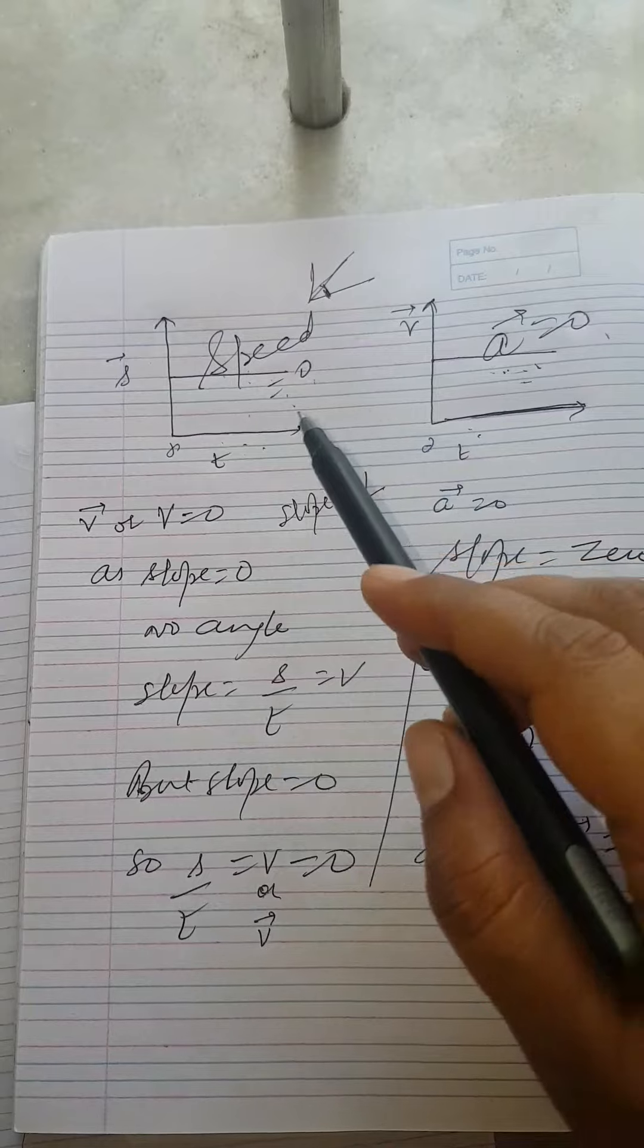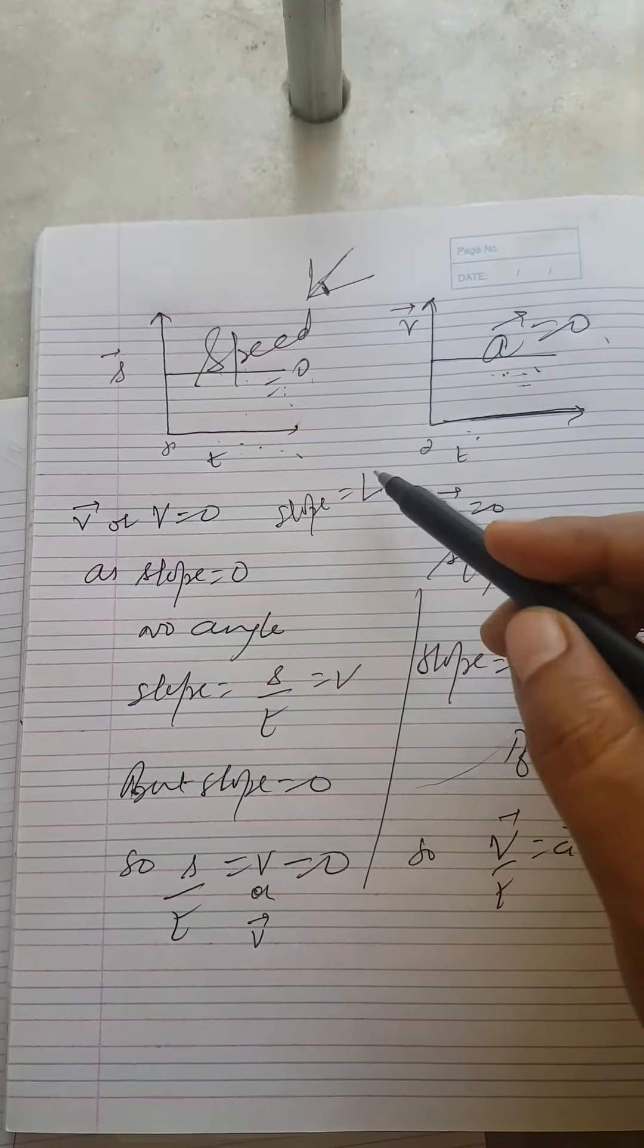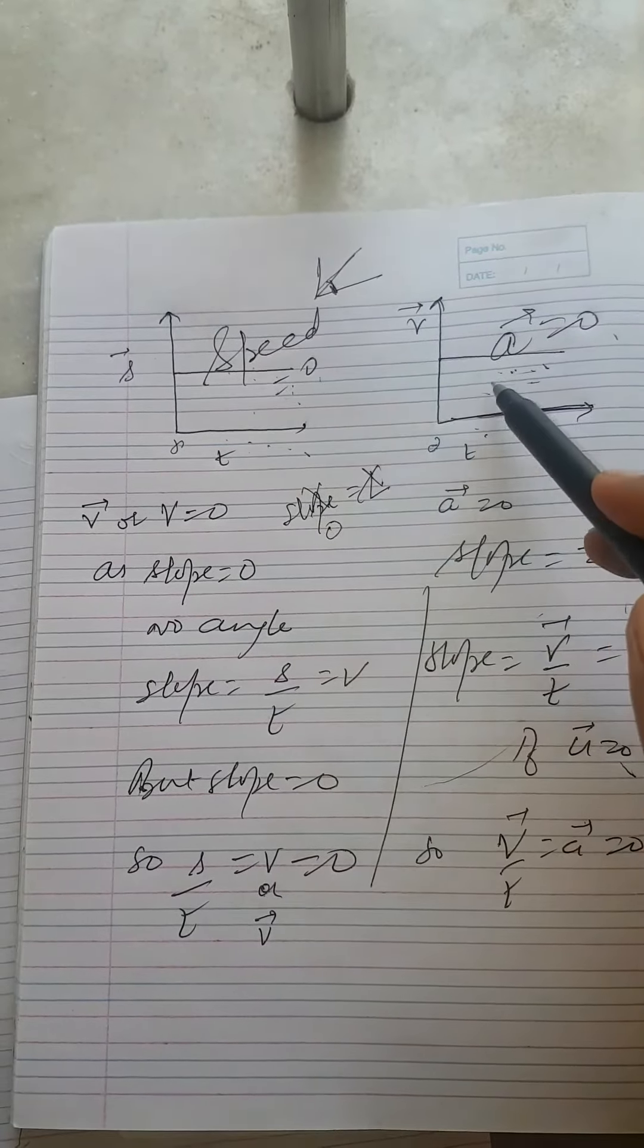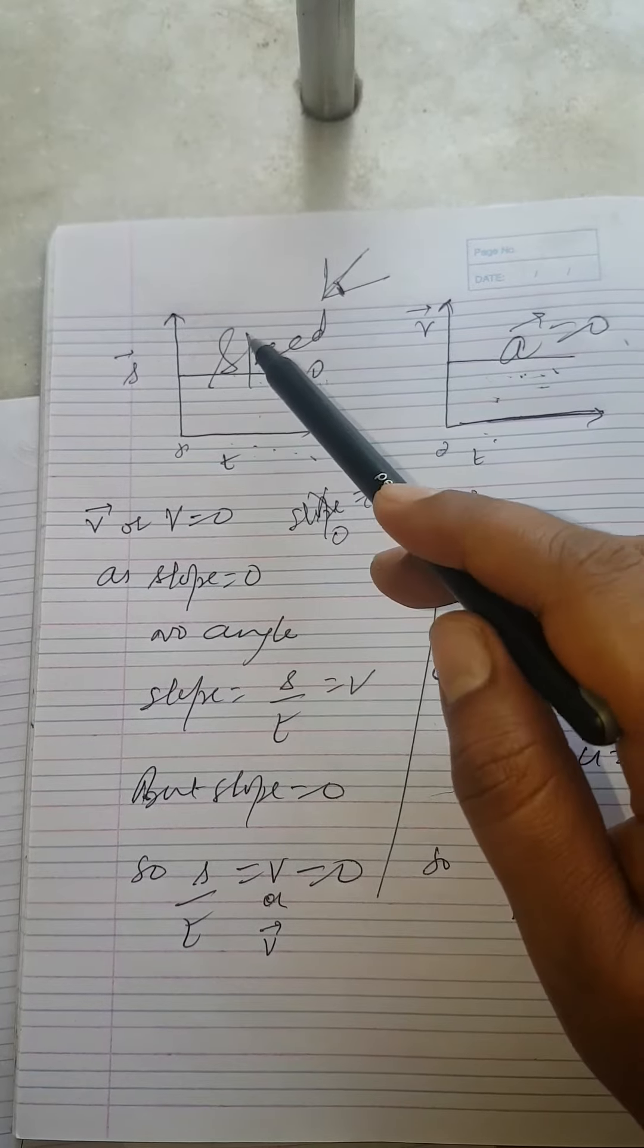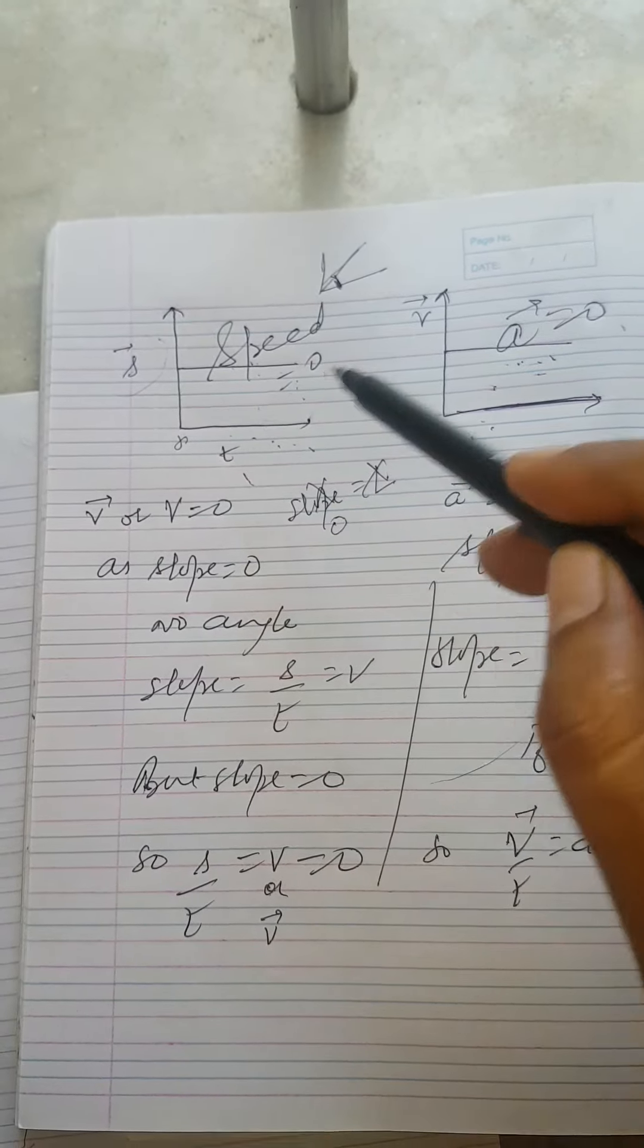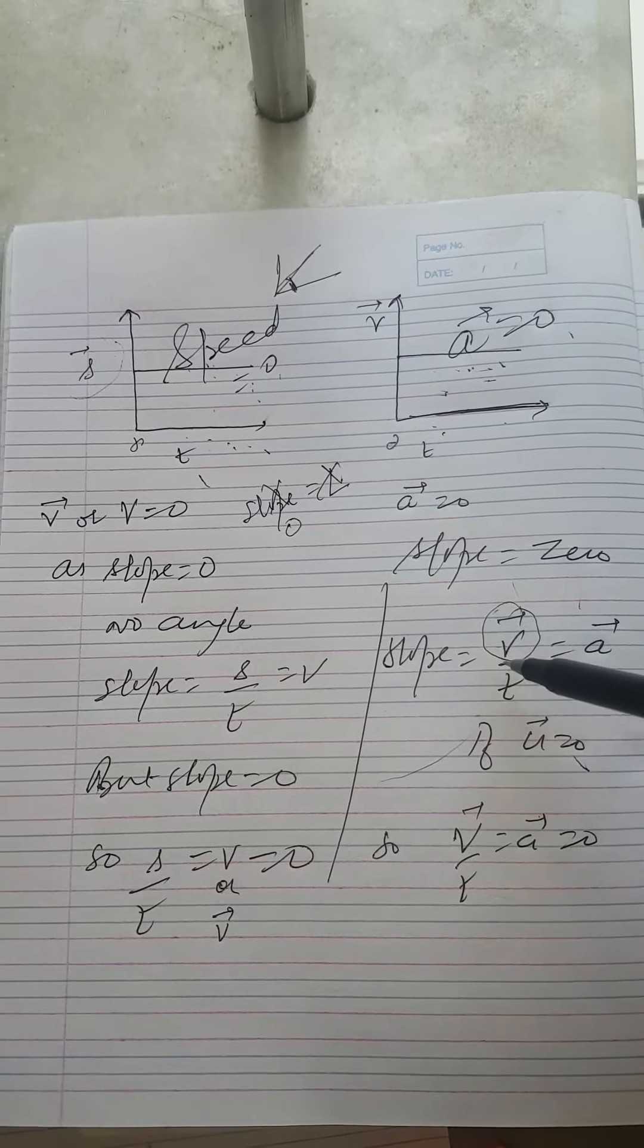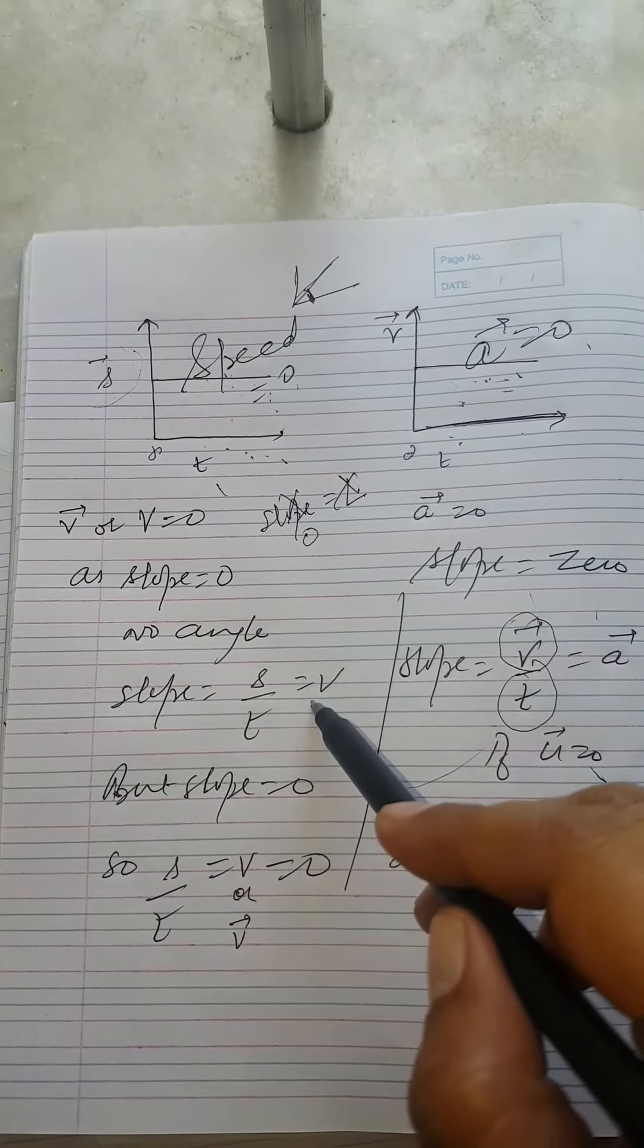And we have discussed earlier also that slope of ST graph is what? Y-axis divided by quantity on x-axis. Similarly for VT graph, the quantity on y-axis divided by quantity on x-axis. That was speed or velocity in case of DT graph and that was acceleration in case of VT graph.